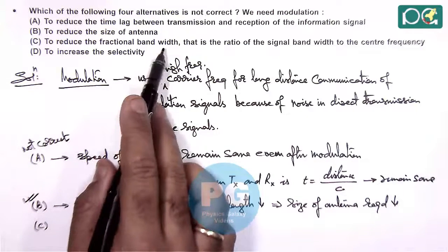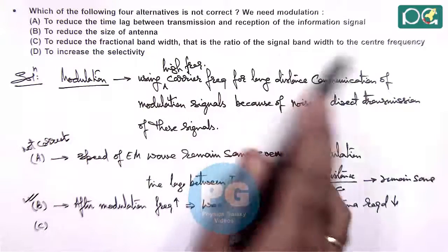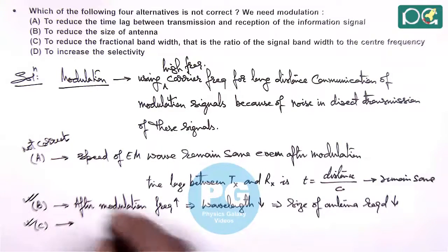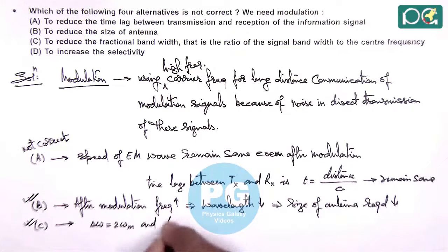And here for conceptual understanding I am discussing all the options. To reduce the fractional bandwidth that is the ratio of signal bandwidth to center frequency, that's also correct because if we talk about bandwidth delta omega, then delta omega we know it is given as twice of omega m, and if we talk about fractional bandwidth.